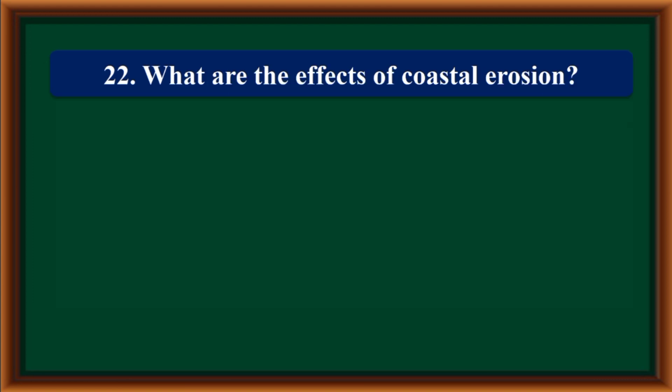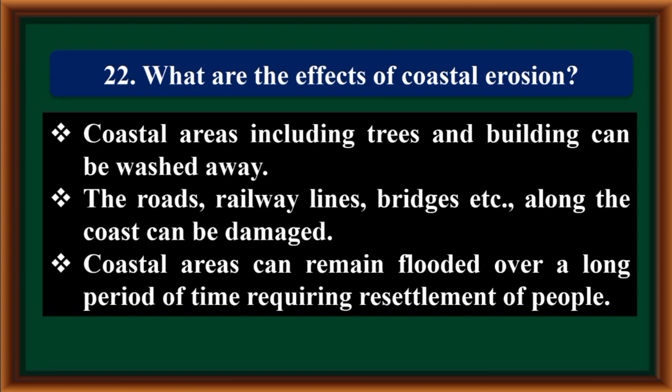What are the effects of coastal erosion? Coastal areas including trees and buildings can be washed away. Roads, railway lines, and bridges along the coast can be damaged. Coastal areas can remain flooded over a long period of time, requiring resettlement of people.